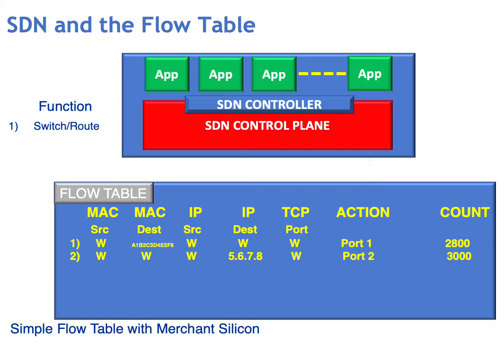We can also make decisions based on the IP address. We can make more complex decisions using the destination address and possibly the source MAC address to determine what comprises a flow. We can then decide what action to take — i.e., which port to forward that flow onto.